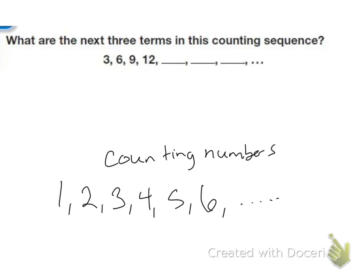We can count by a number other than one. For example, we count by twos: two, four, six, eight. We can count by fives: five, ten, fifteen, twenty.